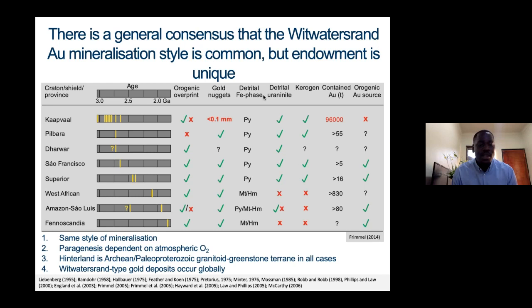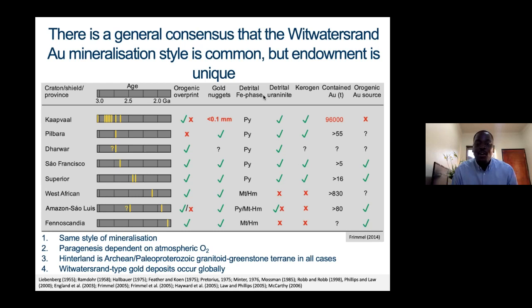One key thing that many people agree on is that there tend to be similarities in the style of mineralization. The paragenesis of this type of gold deposit is more dependent on atmospheric oxygen concentration. The hinterland tends to be associated with Archean or Paleoproterozoic granite-greenstone terrains in all cases. Therefore, without going further, the Wits is not really unique because it does occur globally — but we need to find out what makes it more interesting, what makes it unique, and where the Black Reef fits in.